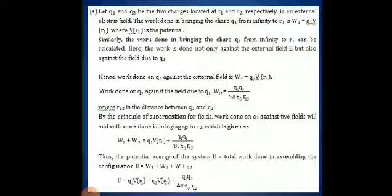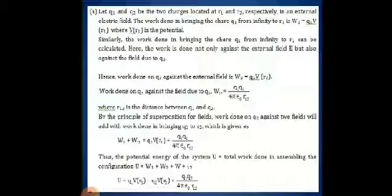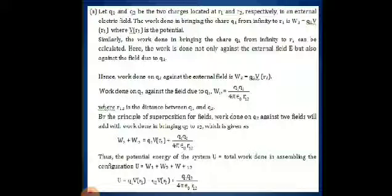This is the total work done in assembling q2 alone against the two fields. We had already done W1 in order to assemble charge q1, which is W1 equivalent to q1 into V of r1. So, the total potential energy of the system, or the total work done in assembling the charges q1 and q2 from infinity to a region where an electric field is already present, is given by U equals q1 into V of r1 plus q2 into V of r2 plus 1 by 4 pi epsilon 0 times q1 q2 divided by r12.